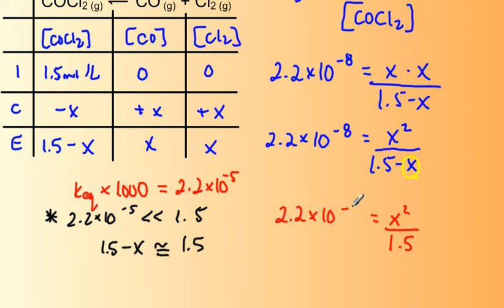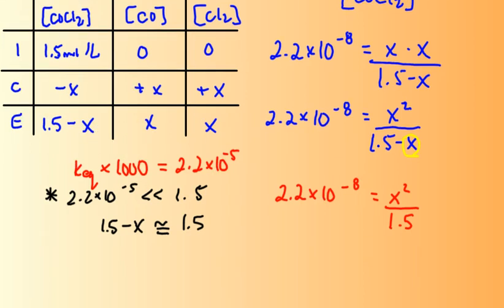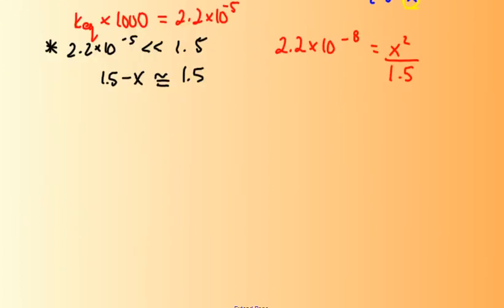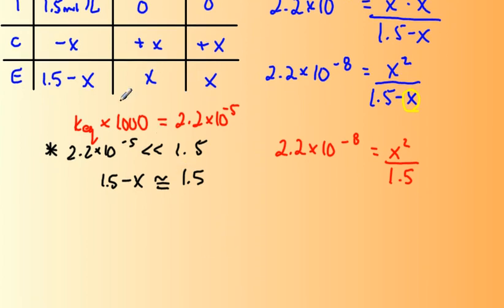So we end up with an expression that looks like this, 2.2 times 10 to the minus 8. And by the way, this multiplying by a thousand business, it's a ground rule. It's just a way for us to make a decision about whether or not it's okay to ignore that X. So it's based on people's experience solving equilibrium problems and how the math works out. So I don't want you to think of it as something mysterious. If we want to solve for X then, so X squared, 2.2 times 10 to the minus 8 times 1.5 is 3.3 times 10 to the minus 8. We'll take the square root of both sides and find that X is equal to 1.8 times 10 to the minus 4.